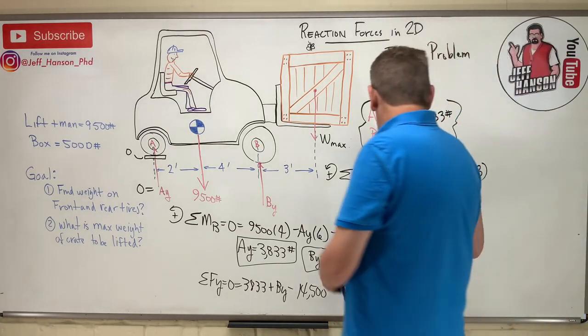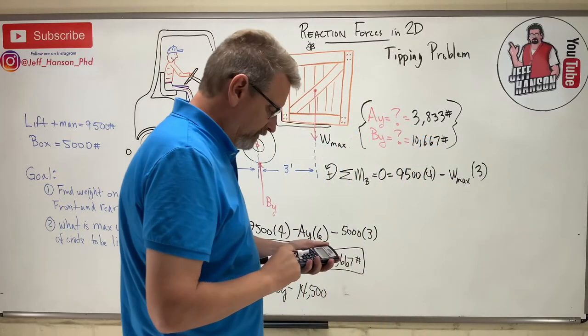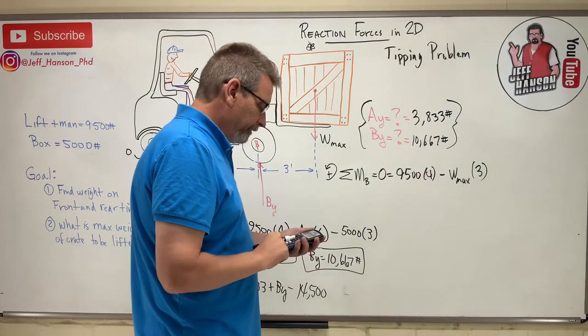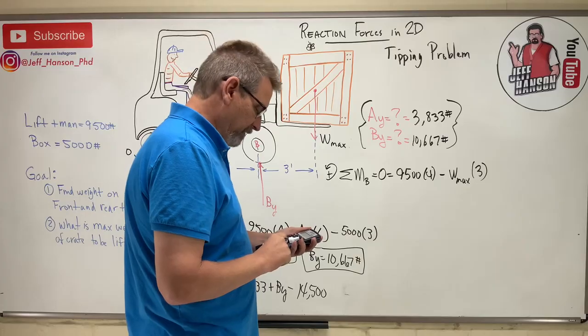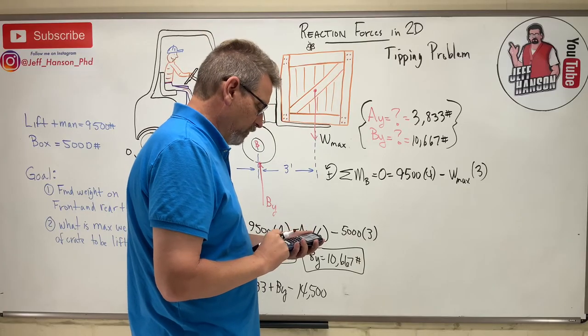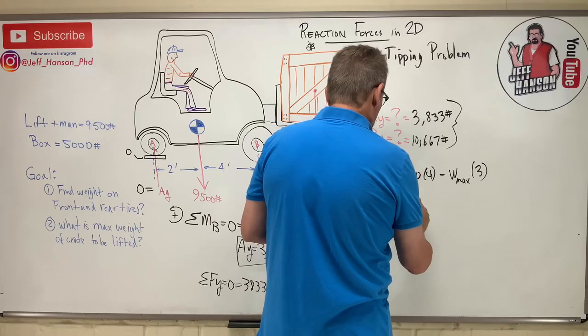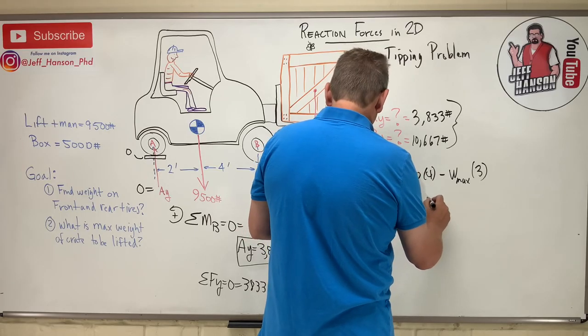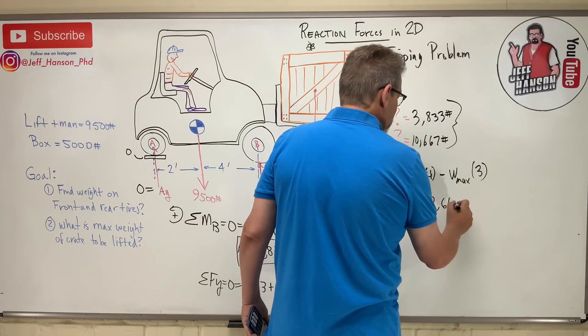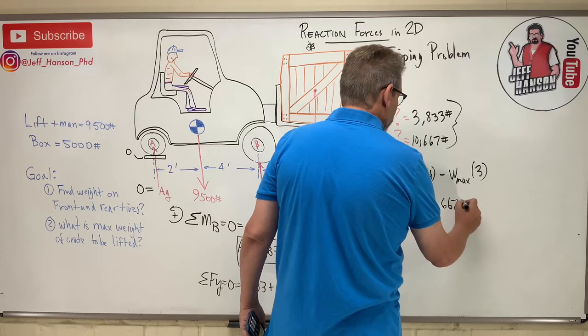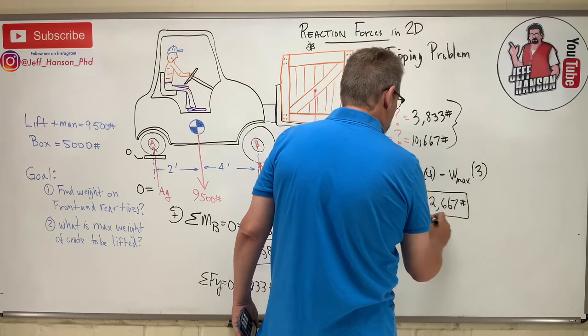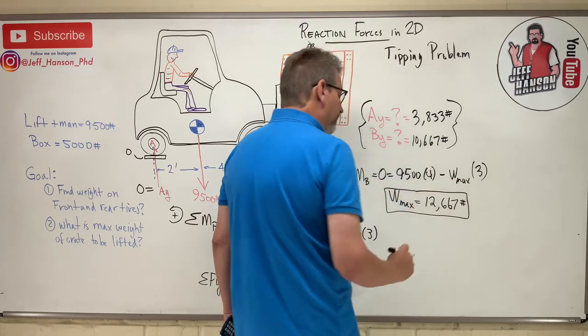Okay, so let's calculate that. 9,500, 10,500 times 4 and then divided by 3 equals 12. So Wmax is equal to 12,667 pounds. Okay, that's the biggest crate that that forklift will pick up. That's a lot of weight for a forklift. That's a big forklift.